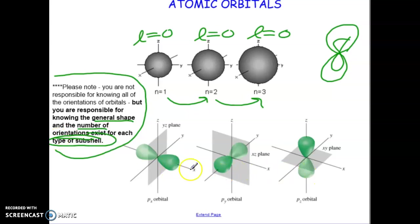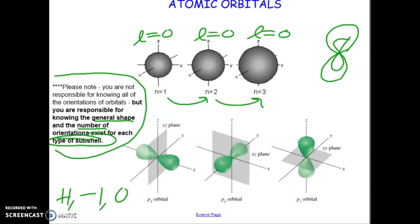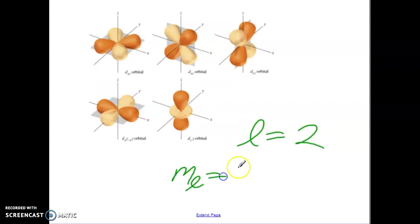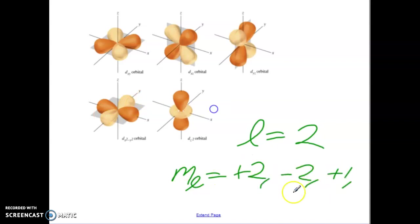Here are our three types of P orbitals. Remember, there are three possibilities: plus 1, negative 1, and 0. Here are the D orbitals. Remember, when L is equal to 2, we can have ML of plus 2, negative 2, plus 1, negative 1, 0 — there are 5. Here they are: 1, 2, 3, 4, 5.